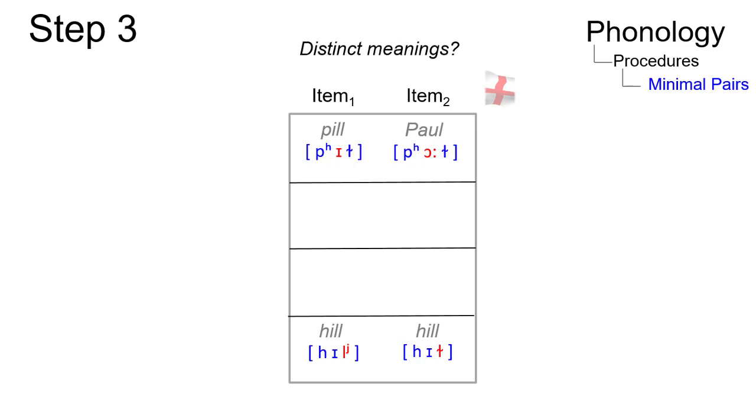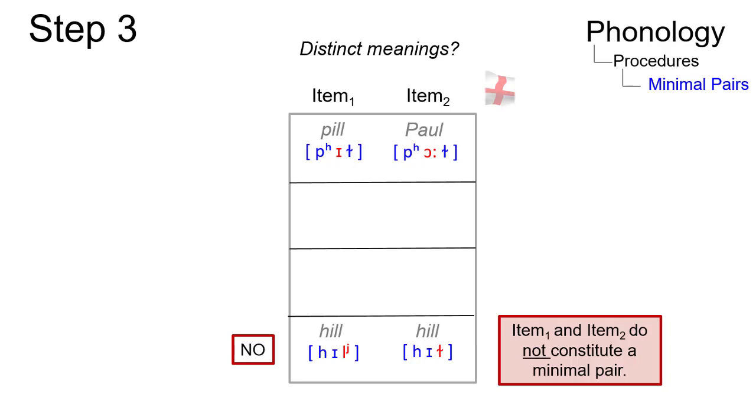Step three compares the meanings. If both items mean the same, despite some odd pronunciation effects as in hill versus hill, they do not constitute a minimal pair and the two different sounds must be members of the same phoneme.